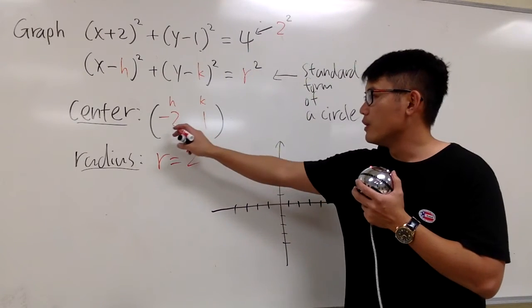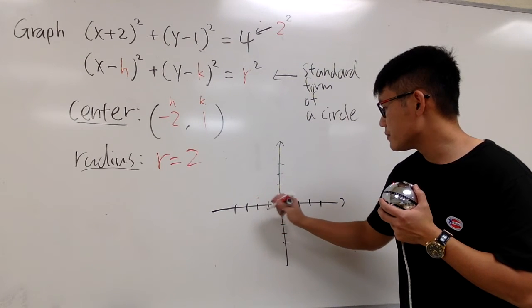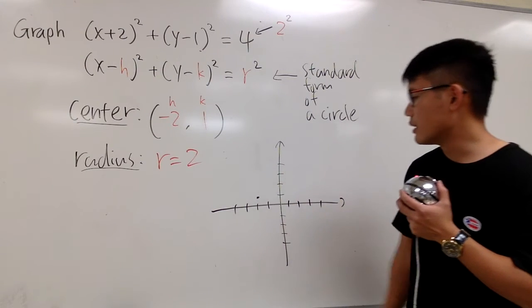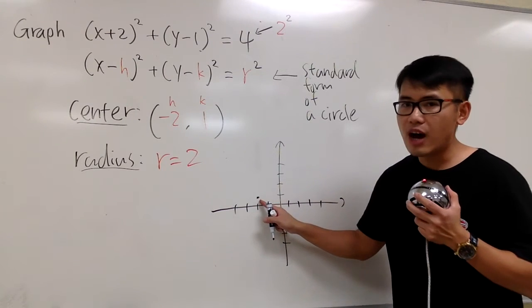First of all, put down the center, which is negative 2, comma 1 is right here. Okay, I'm just going to use black right here. So, you have the center, and now, the radius is 2, right?